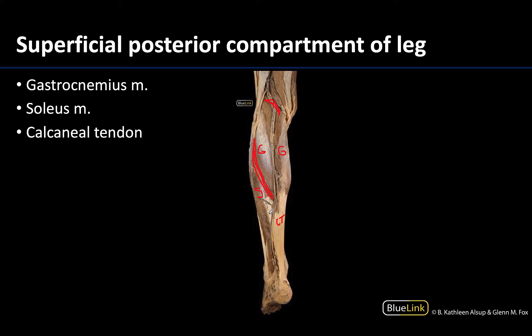Once the belly of the soleus ends, you get a more narrow but thicker and very prominent portion of the calcaneal tendon, because the calcaneal tendon is a shared tendon of the gastrocnemius and the soleus. You can see where it's a little wider up here and then really condenses, but it's still quite powerful as it attaches to the calcaneus — that is the distal attachment.